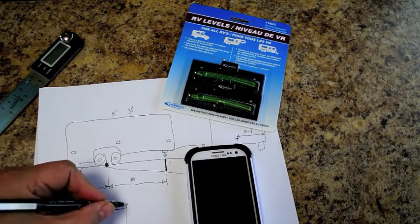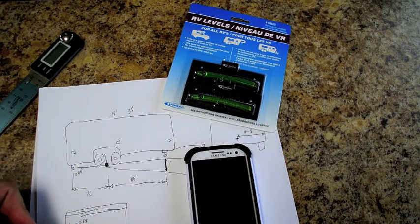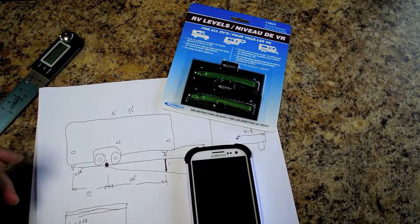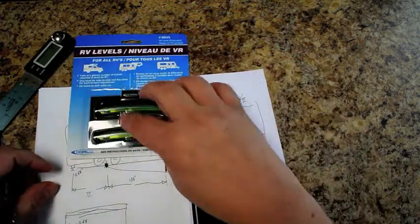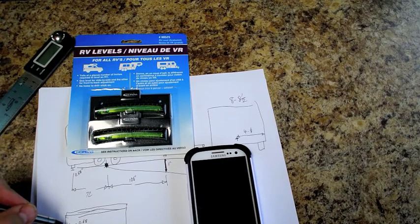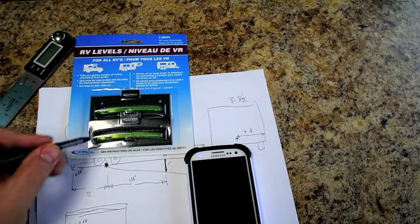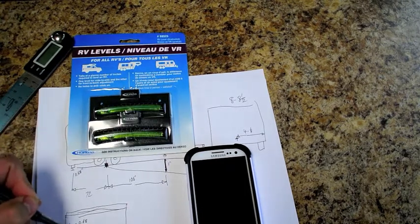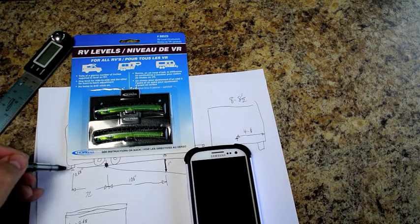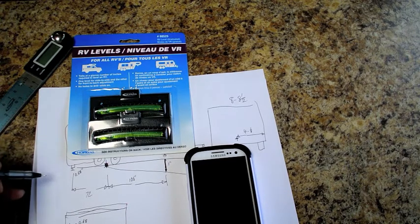And the next time you use this thing, you can just pull the chart out and just say, okay, when this shows 1, I am 0.68 inches low or high, whichever the case may be.